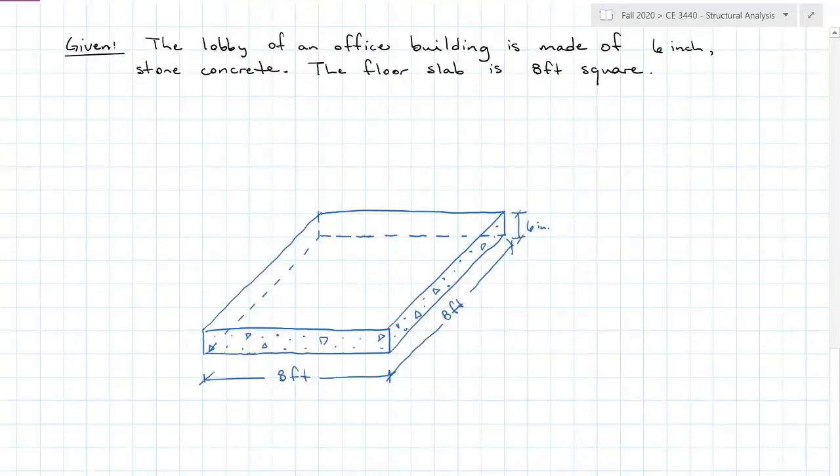This time we have an eight foot square slab from the lobby of an office building with six inch stone concrete. We want to find the resultant force on the slab. Down here I've got my slab drawn in blue, six inches deep and eight foot square. This particular problem tells us this is the lobby of an office building, which means there's going to be live loads involved here.